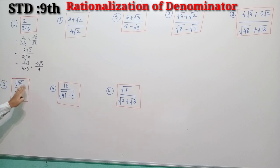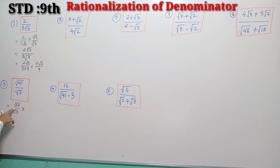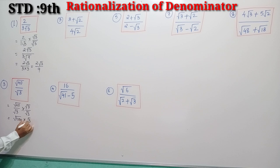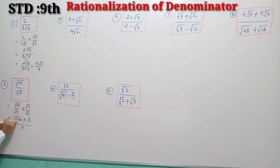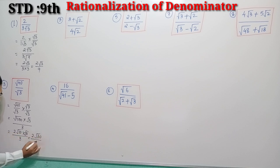Moving to the next question: √40 by √3. There is no need to multiply by the conjugate of √3; simply multiply by √3 over √3. Now 40 can be written as 4 × 10, so √40 = 2√10. Numerator becomes 2√10 × √3 = 2√30, and denominator √3 × √3 = 3. So the answer is 2√30 by 3.